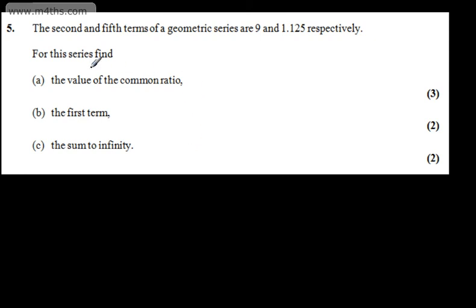So let's start off with the value of the common ratio. We've got a geometric series. We can say the nth term is AR to the power of n minus 1. So if we think about this now, the fifth term is going to be AR to the power of 4. That's going to give us 1.125.